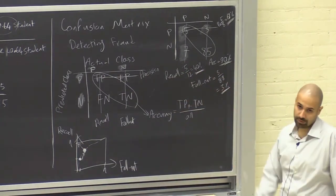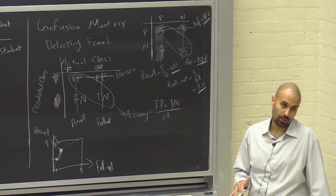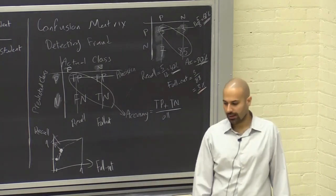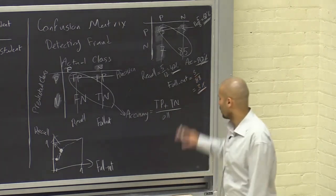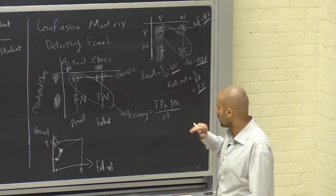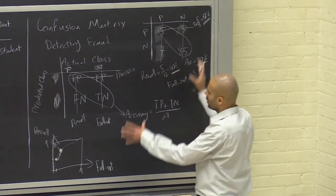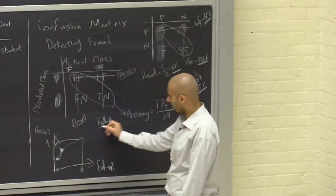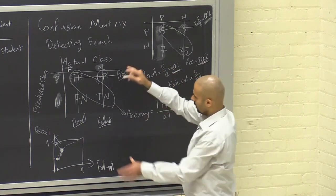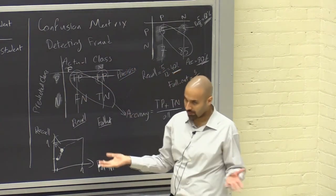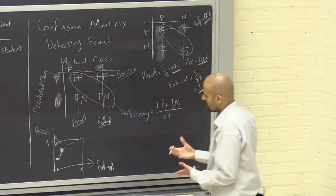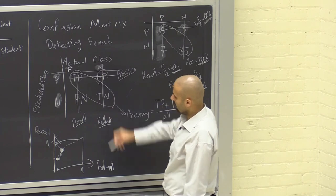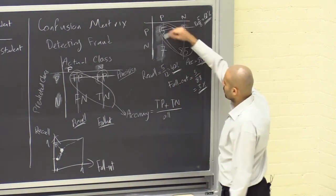The confusion matrix is one of the top five most important concepts in machine learning and predictive modeling. Check your textbook and post questions on Piazza. You need to know precision, recall, fallout, and accuracy — how to compute each from the matrix. Sometimes the table is rotated with actual classes in rows and predicted in columns; don't let that confuse you. Recall and fallout are needed for the ROC curve; accuracy is the sum of diagonal entries over all entries.